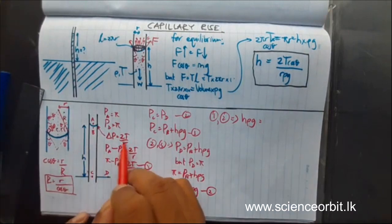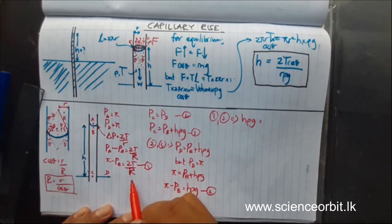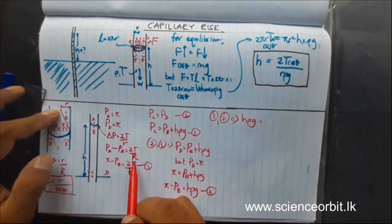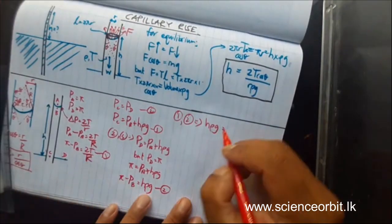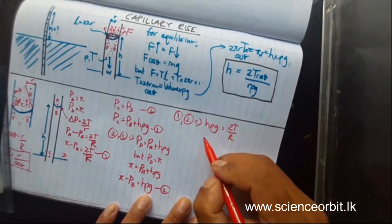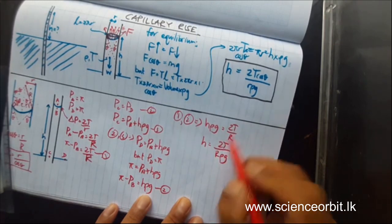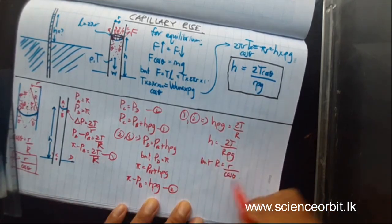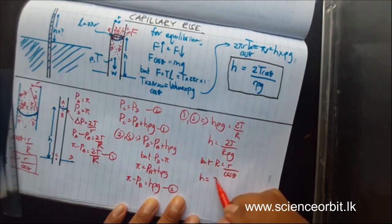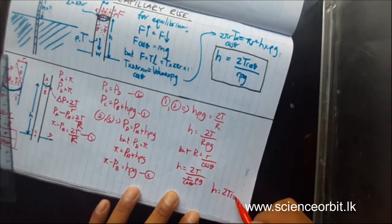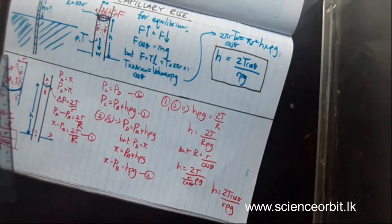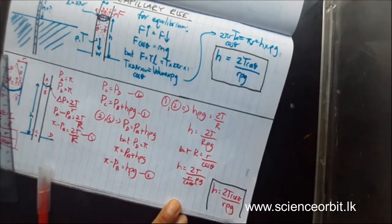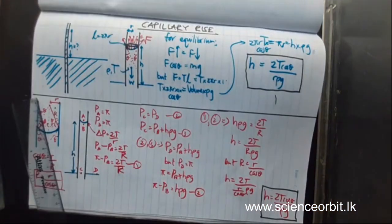I made a small mistake earlier — I should have substituted capital R for the radius of the meniscus, not simple r. So: 2T / capital R = h rho g, giving h = 2T / (capital R × rho g). But capital R equals simple r / cos theta. Substituting: h = 2T / (r / cos theta × rho g), which gives h = 2T cos theta / (r rho g). This is the same equation as before. In MCQs you can directly use this highlighted equation.